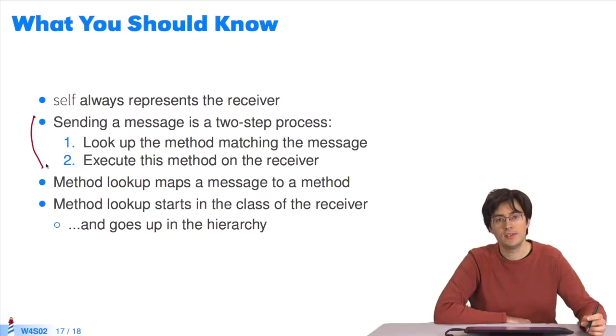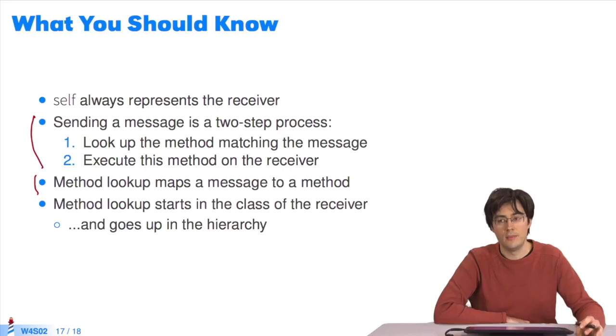To conclude, self, like this in Java, always represents the receiver. Message sending always involves two steps. First, the lookup algorithm looks for a match between the method and the message sent. Second step, the method found is executed on the receiver. The lookup algorithm travels up from the receiver's class. The goal of the algorithm lookup is to find a method that matches the message sent to a receiver.